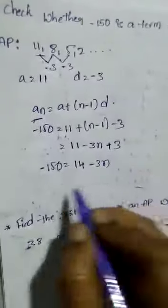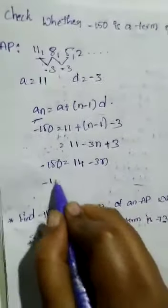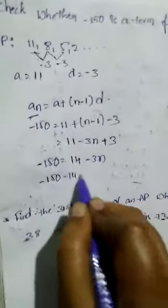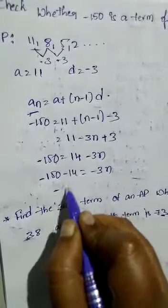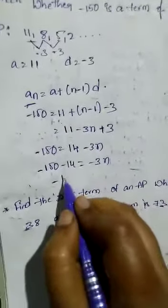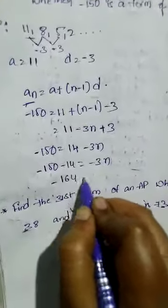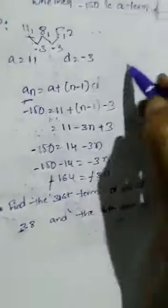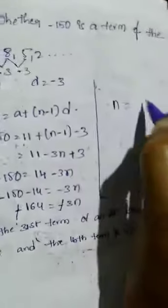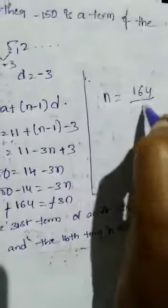An is 150, minus 150. Minus 14 equal to minus 3n, equal to minus 150 plus 14, minus 164 equal to minus 3n. Minus minus get cancelled, and n equal to 164 by 3.